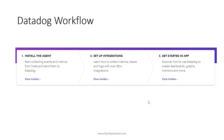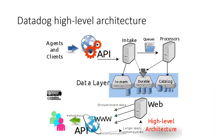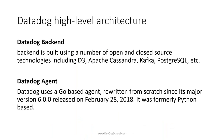What is the flow in Datadog? It's simple: install the agent, enable the integration for the metrics you want to gather, and all data is published to the Datadog website where you use dashboards, graphs, and alerts.